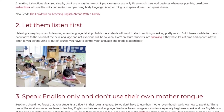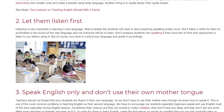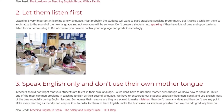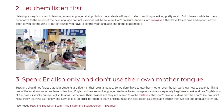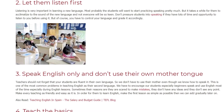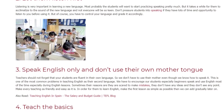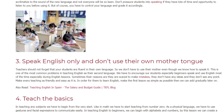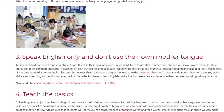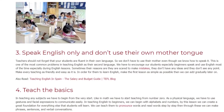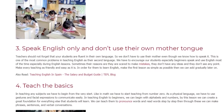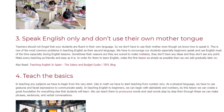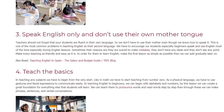Tip 3: Speak English Only and Don't Use Their Mother Tongue. Teachers should not forget that your students are already fluent in their own language, so we don't have to use their mother tongue even though we know how to speak it. This is one of the most common problems in teaching English as a second language. We have to encourage our students, especially beginners, to speak and use English most of the time. Sometimes their reasons for not doing so are that they are scared to make mistakes, they don't have any ideas, or they don't see the point. Make every lesson as friendly and easy as possible, and make the first lesson as simple as possible, then gradually add more later on.